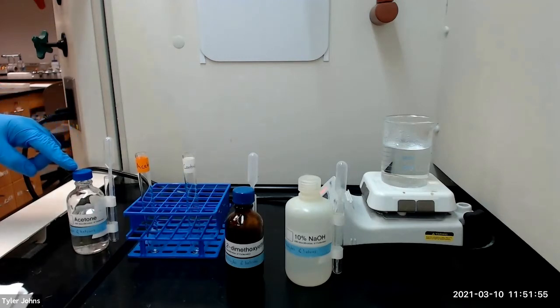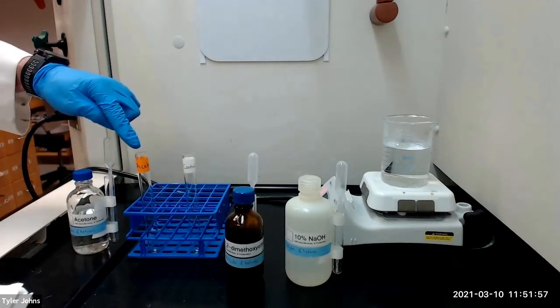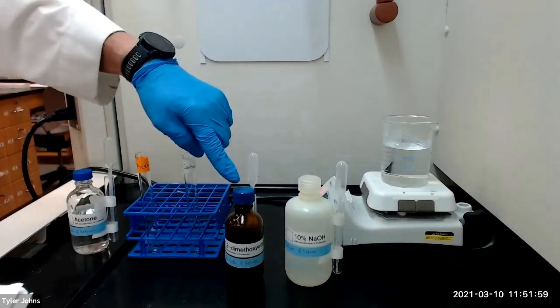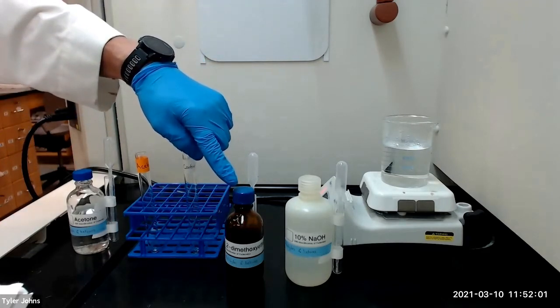We will begin by adding a small amount of acetone to a test tube and then dissolving the acetone in 2 milliliters of 1,2-dimethoxyethane.